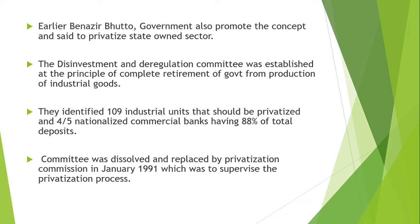The main purpose of the Disinvestment and Deregulation Committee was this. They had 109 industrial units identified, which were major industrial units in Pakistan. They tried to privatize them. There were also 5 nationalized commercial banks, which held 88% of deposits — they tried to privatize those as well.